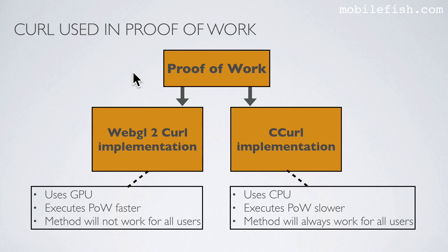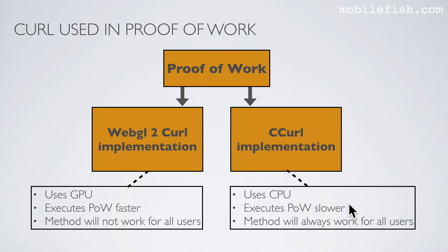Let's recap. To do the proof of work, the light wallet gives you two options: WebGL curl implementation and C curl implementation. If you select WebGL curl implementation, it uses the GPU, executes the proof of work faster, but this method will not work for all users. Please note that executing proof of work faster and slower are just general remarks — it is possible that in your case the results differ. You have to try out both options to see which works for you.